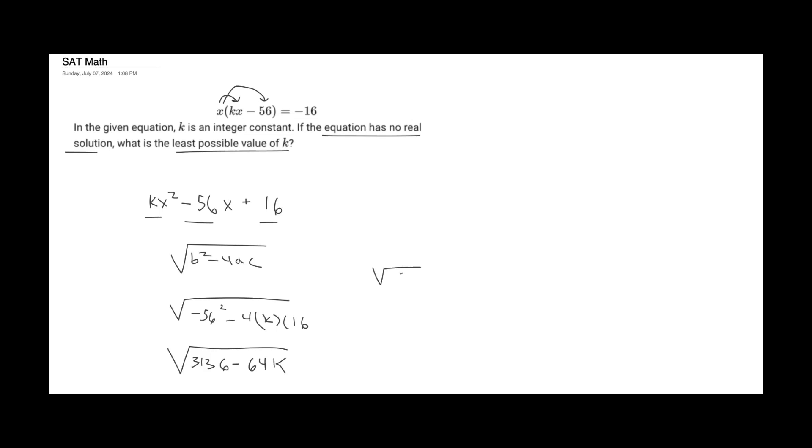So in our case, the square root of 0, what would make the 0? Well, k would have to multiply by 64 to give us 3,136. So in this case, k would then be equivalent to a value of 49.